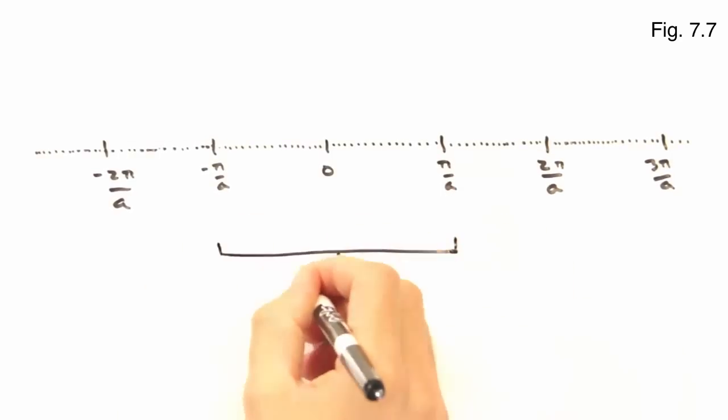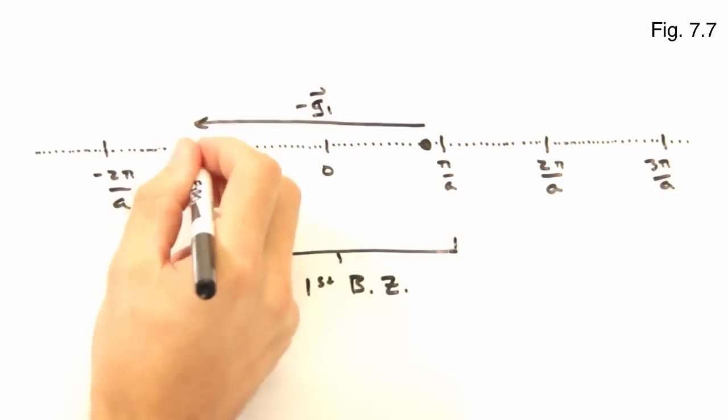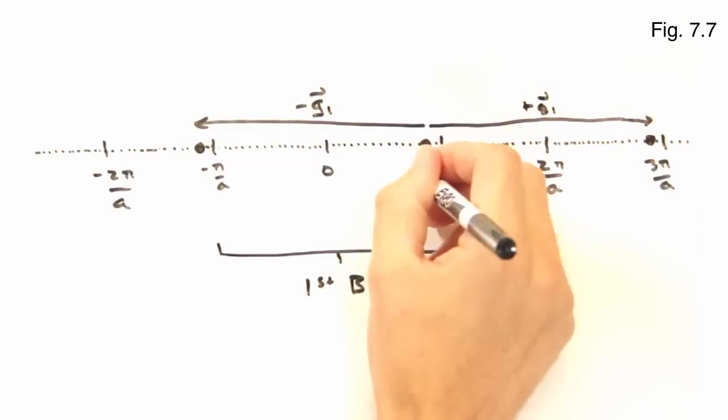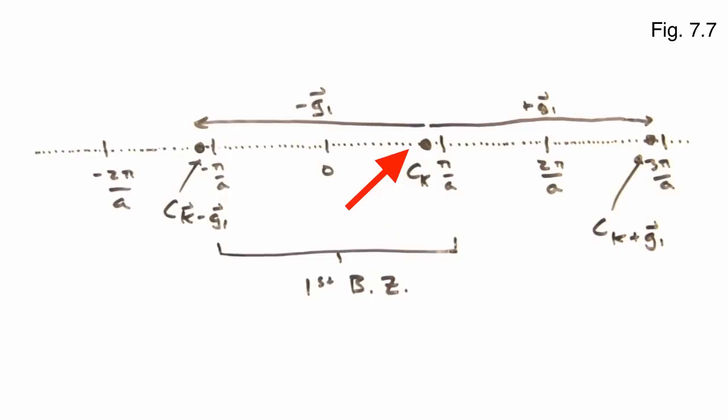We saw in earlier videos that a sample as short as a centimeter would have 10 to the 7th points in the first Brillouin zone. Let's zoom in on one of our k points. From this equation, we only care about this point, and then this point at k minus g1, and so forth and so on. Do we care at all about this k point right next to the original k point? No. What about this one, or any other k points between k and k minus g? Nope. Exactly.